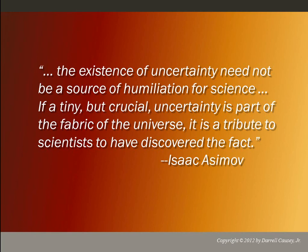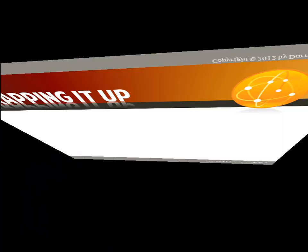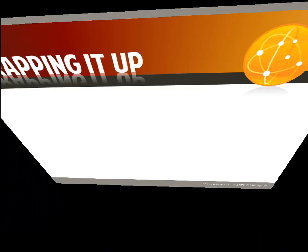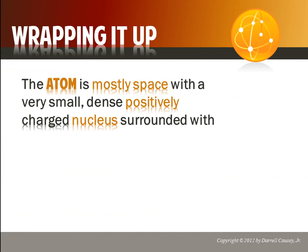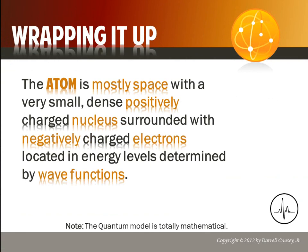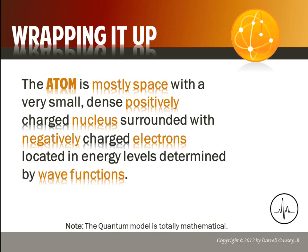Wrapping it up. The atom is mostly space with a very small, dense, positively charged nucleus surrounded by negatively charged electrons located in energy levels determined by wave function. This whole quantum mechanical theory is totally mathematical and has very little empirical evidence. However, we have been able to make empirical predictions and they are workable. We are not looking for truth here — just workability. If you have any questions, send an email to mrkazi@mrkazi.com and check out www.mrkazi.com for PowerPoints and much more, or you can join my YouTube.